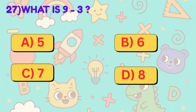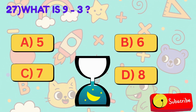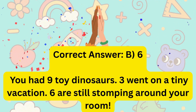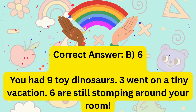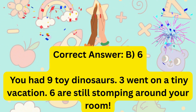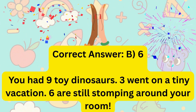27. What is 9 minus 3? Is it A, 5, B, 6, C, 7, or D, 8? Correct answer is B, 6. You had 9 toy dinosaurs. 3 went on a tiny vacation. 6 are still stomping around your room.